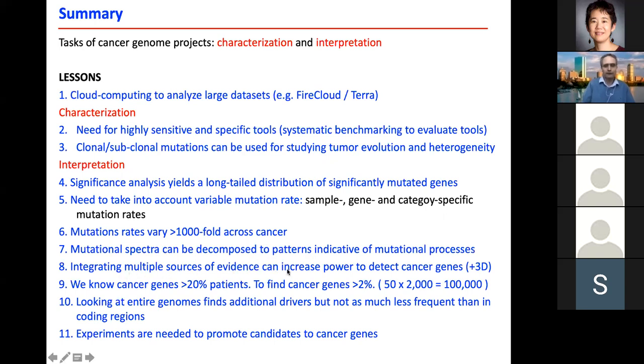Integrating multiple sources of evidence can increase the power to detect cancer genes like the clustering and the of course the number of mutations compared to the background, the clustering, the functional effect of mutations and the 3D clustering of mutations. We know cancer genes mutated more than 20% of patients, but to find the ones more than 2% of patients, we need a hundred thousand tumors.